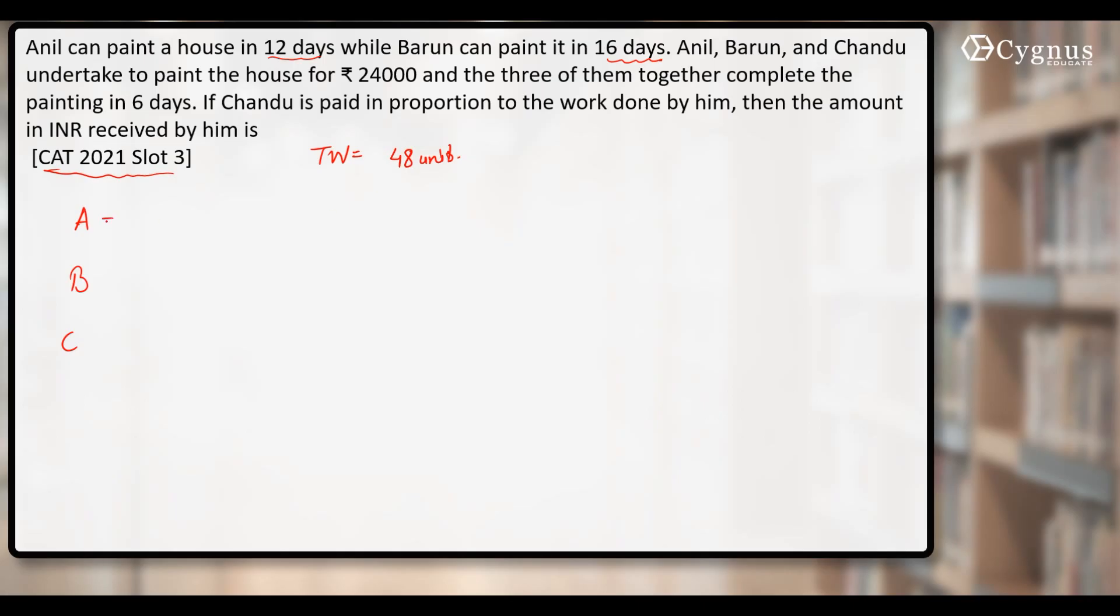48 units of the work can be done by Anil alone in 12 days. That means one day's work of Anil is 4 units, while one day's work of Barun, in similar fashion, will be 48 by 16, that is 3 units.